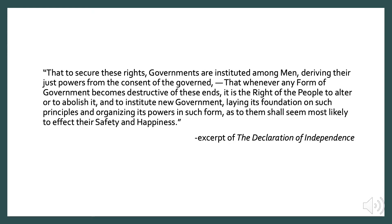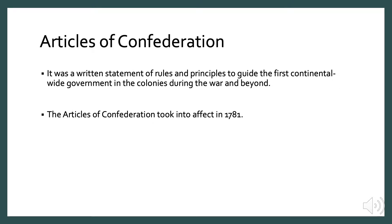The Articles of Confederation was the world's first written constitution that clearly outlined the rights, duties, and powers of the government and the people. The colonists needed some type of government, so the Second Continental Congress drafted the Articles of Confederation. The document wasn't formally ratified by all 13 colonies until 1781. It created a league of friendship among the states, but the states remained sovereign and independent. The sole body of government rested in Congress, where each state had one vote.